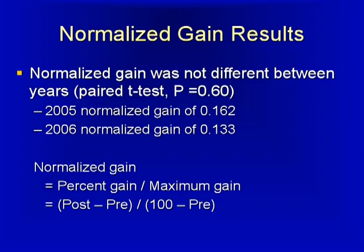divided by the maximum gain, where the maximum gain is 100 minus pre. So if they started with 10% — 10% knew it — that would be my pre-test. My denominator here would be 90, which is 100 minus 10. And then if 25% ended up knowing it, my numerator would be 25 minus 10. So it would be 15 over 90 to give me an estimate of that gain. And that's what I was using.